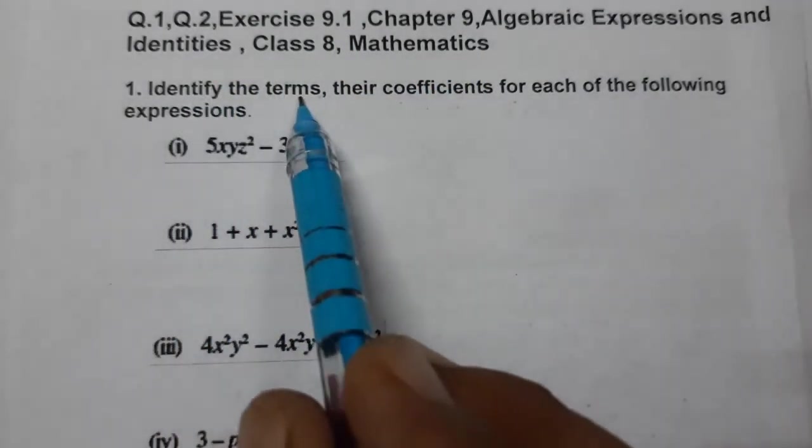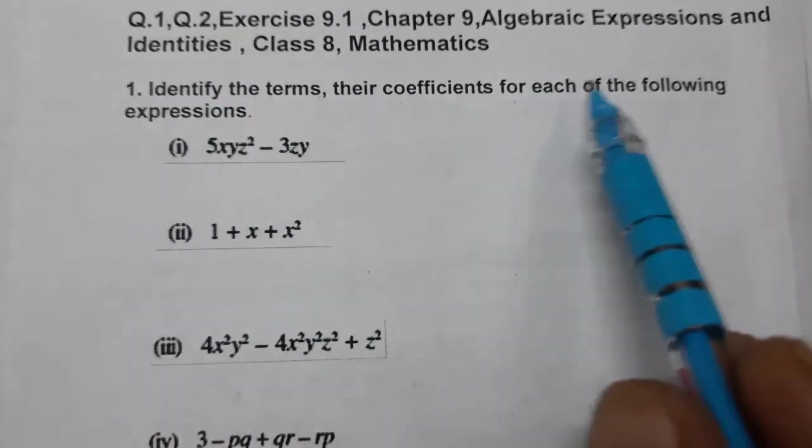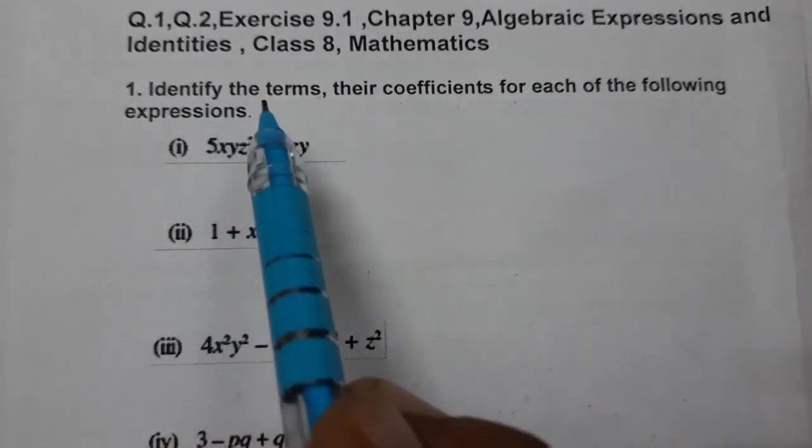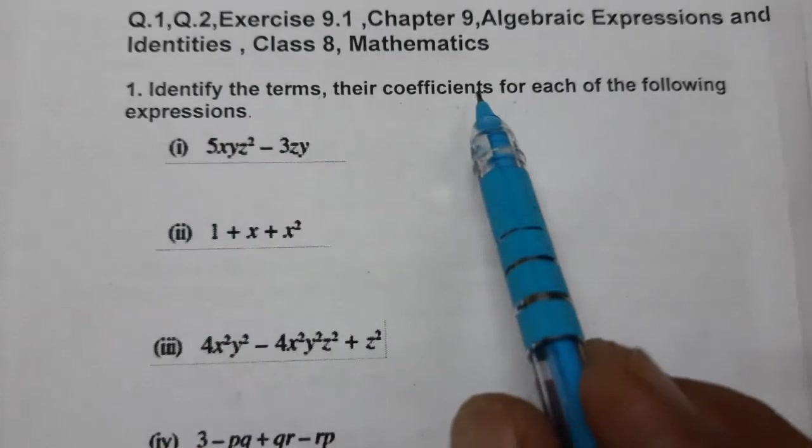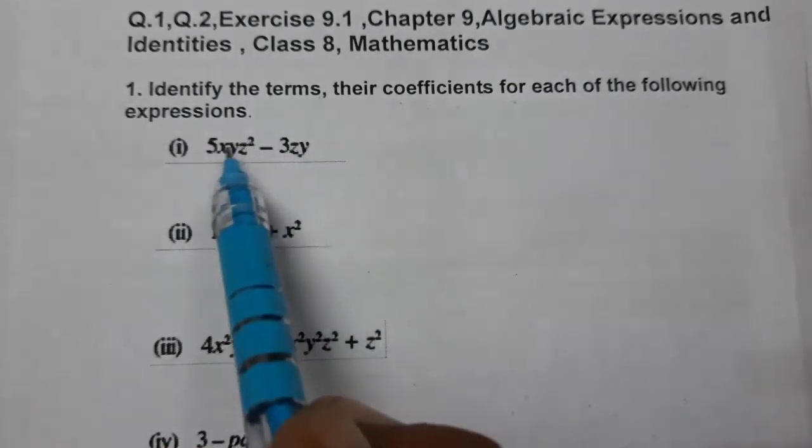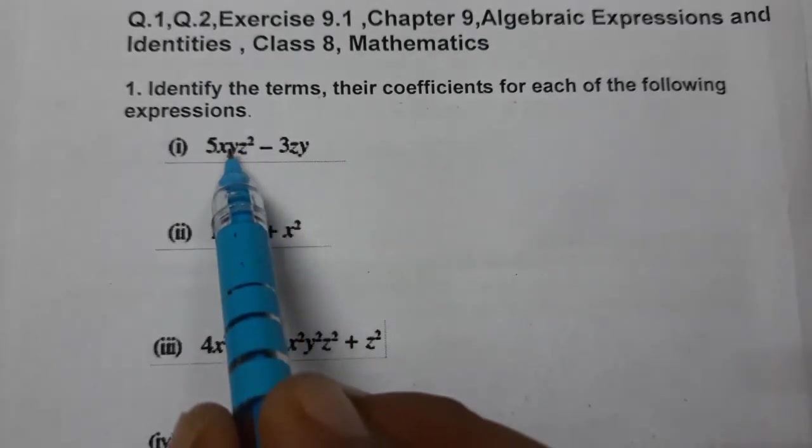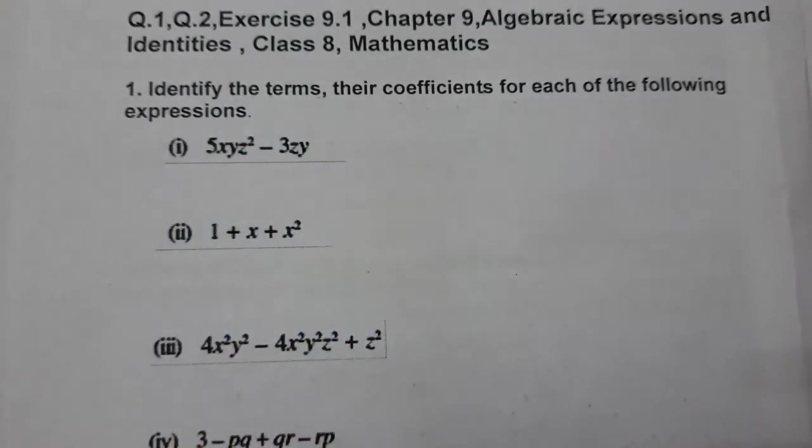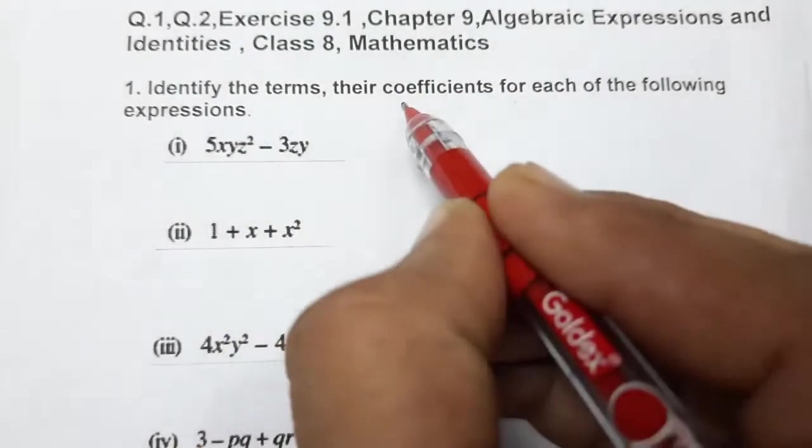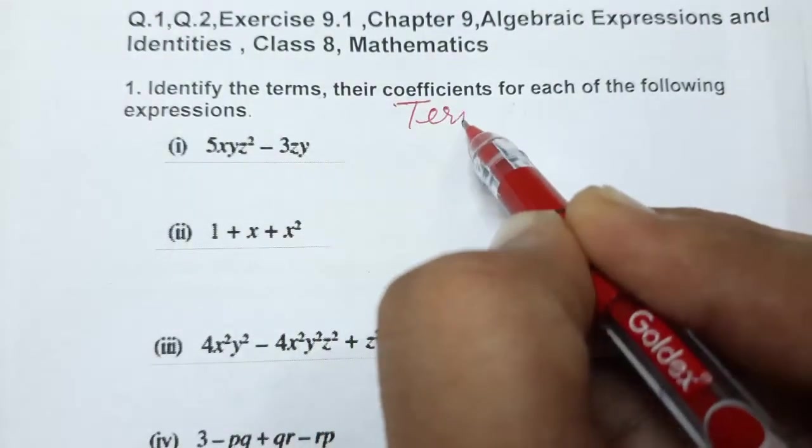Identify the terms and their coefficients for each of the following expressions. Terms are always separated by plus and minus signs. So first of all, these are terms and these are the coefficients.